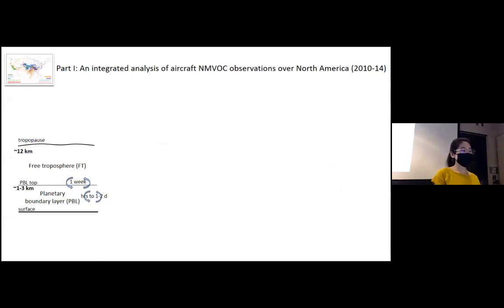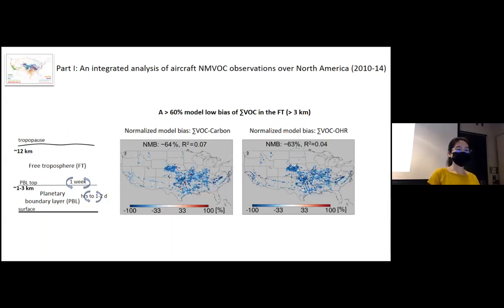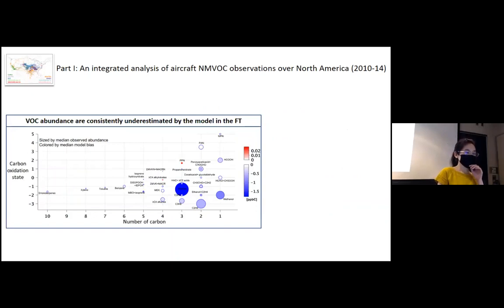The atmosphere can be divided into two layers. The planetary boundary layer, which is within one to three kilometers above surface, and the free troposphere above that. The PBL is relatively well mixed, and it takes only hours to one to two days to get fully mixed, while the free troposphere is relatively decoupled from the surface emissions, which takes more than one week to get the PBL fully ventilated with the free troposphere air. This combined aircraft data sets reveal a more than 60% model low bias of total VOC in the free troposphere, in terms of both carbon and OH reactivity.